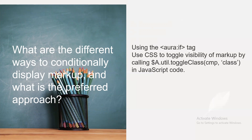What are the different ways to conditionally display markup, and what is the preferred approach? Using the aura:if tag, or using CSS to toggle the visibility of markup by calling $A.util.toggleClass(cmp, 'class') in JavaScript code. This is the best approach to conditionally apply markup.